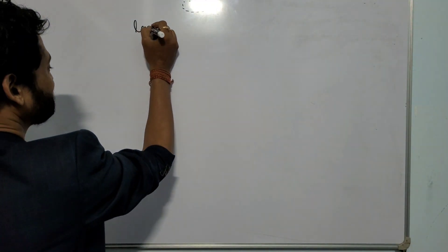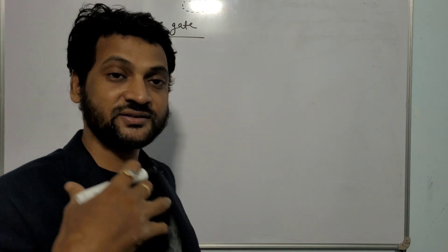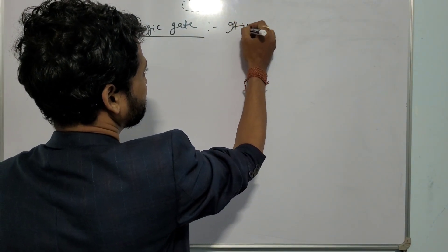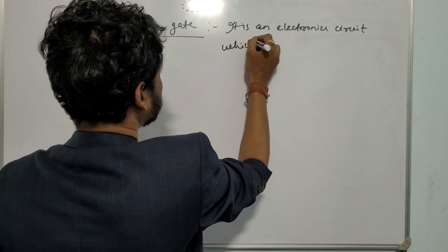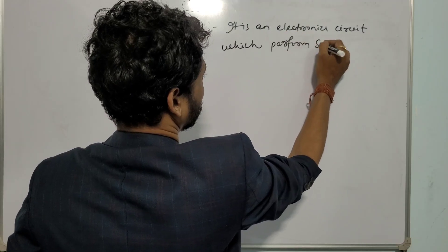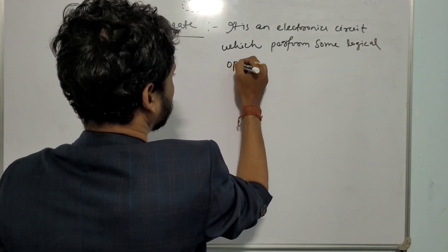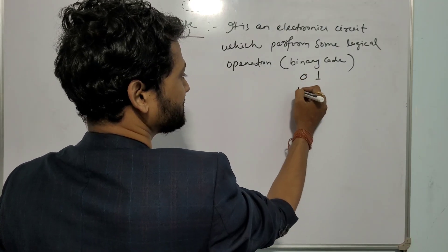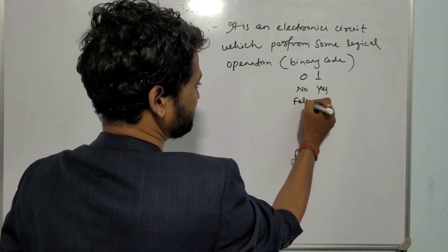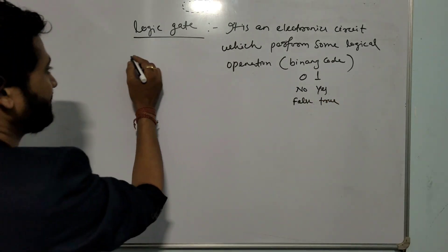Hello everyone, good evening. In this lecture I will explain the basic concept of logic gates and their operation. My name is SRP, you are watching my channel Love You Science. A logic gate is an electronic digital circuit which performs some logical operation by using binary code. Binary code is 0 and 1, where 0 means false and 1 means true.